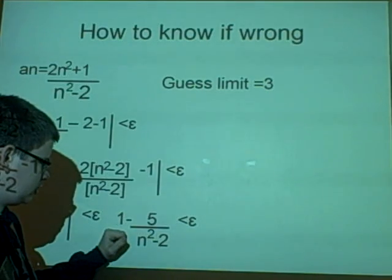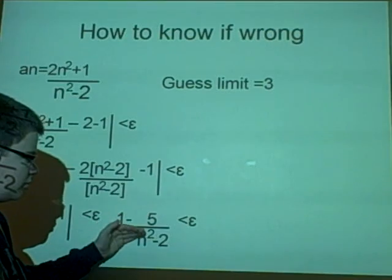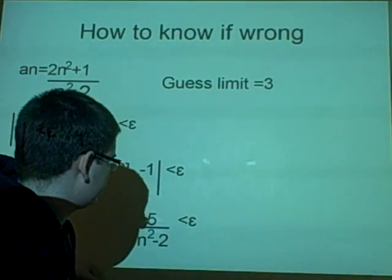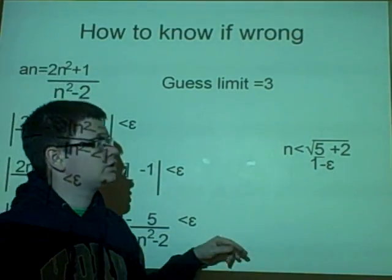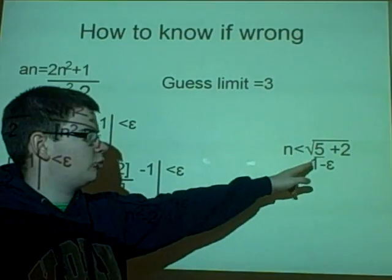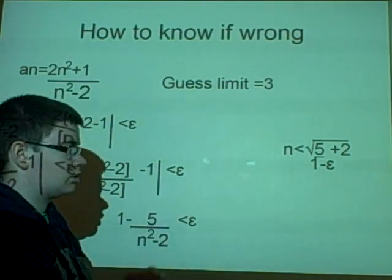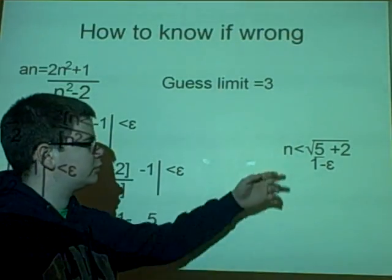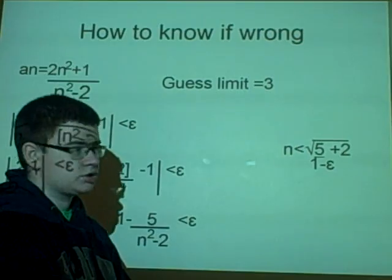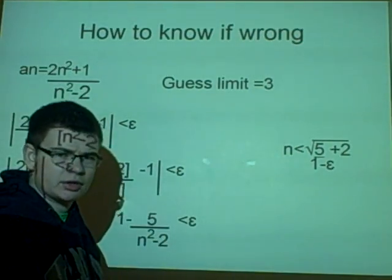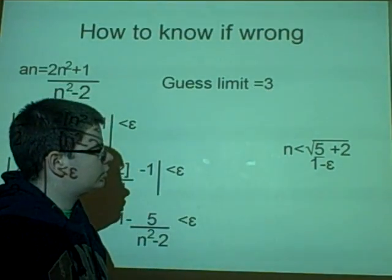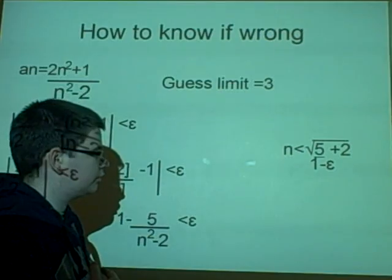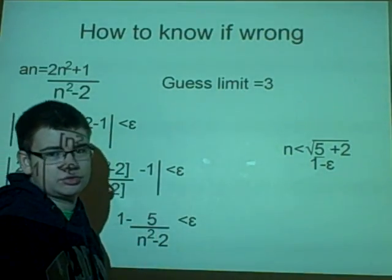We move terms around: switch the signs, move n² - 2 up and epsilon down, giving 5/(1 - epsilon) = n² - 2, then add 2 and take the square root. This leaves us with n < sqrt(5/(1 - epsilon) + 2). We've said n is smaller than that value — but we know there's no number bigger than n in the natural numbers, so this is a contradiction. Therefore 3 is not the limit.